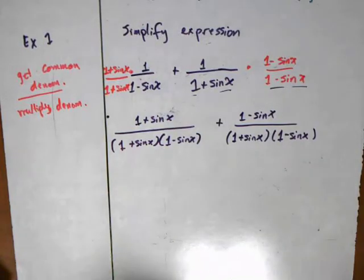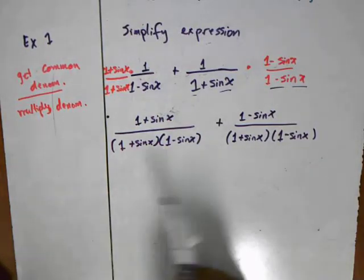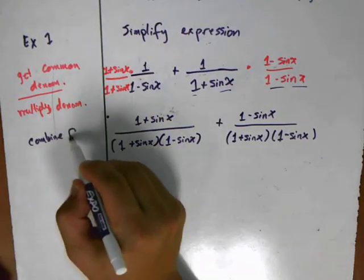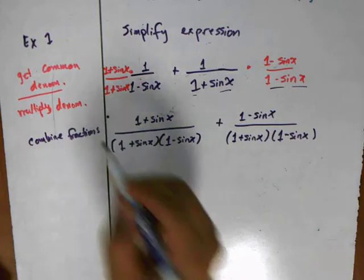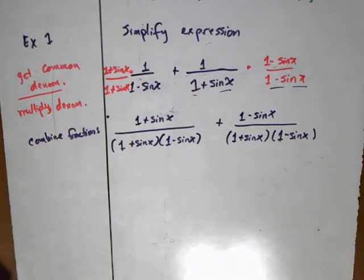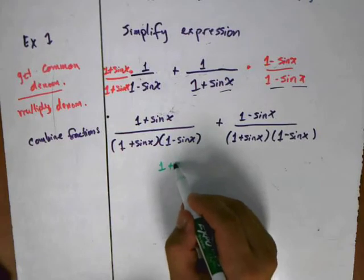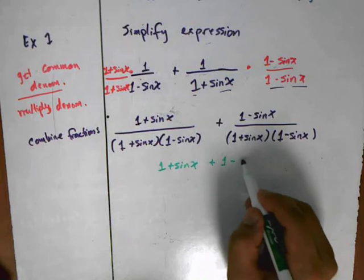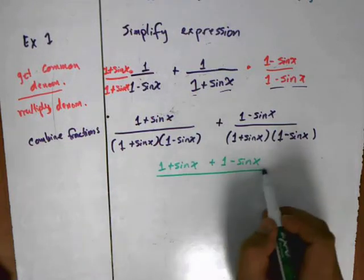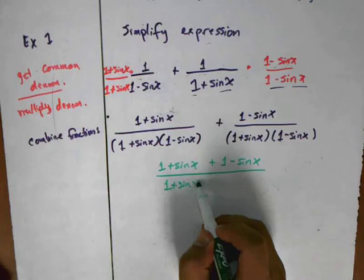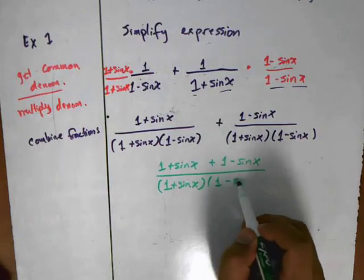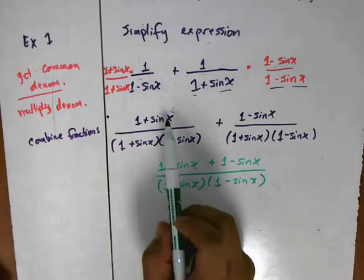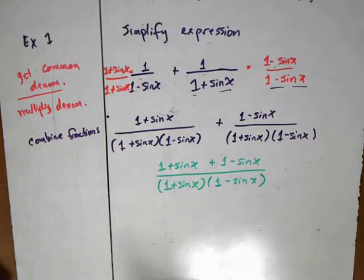You can see here since the denominators now are the same, what I can do is combine the two fractions. Now what I have is 1 plus sine x plus 1 minus sine x all of it over 1 plus sine x times 1 minus sine x. They're the same denominator so I keep that denominator and I add the two numerators - this is just basic rules for adding fractions.